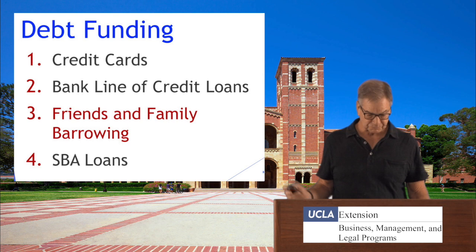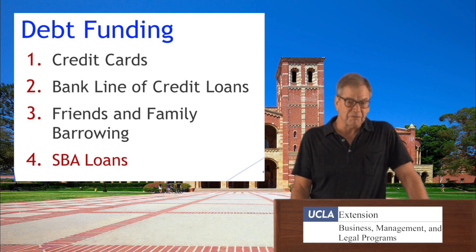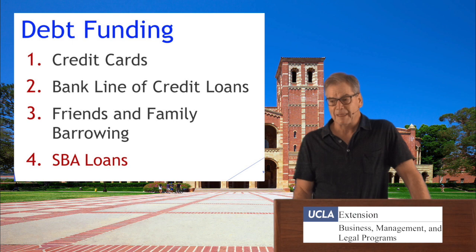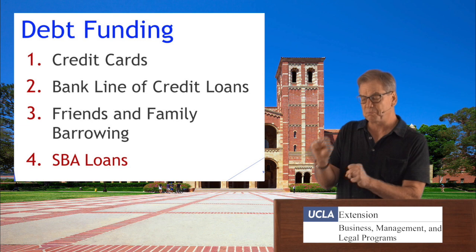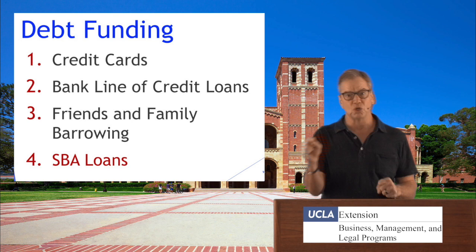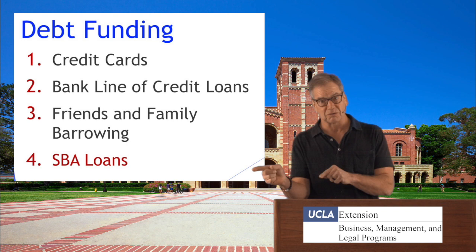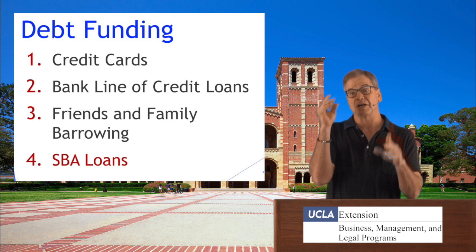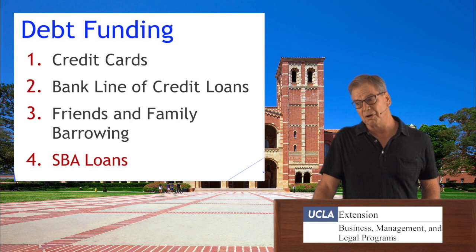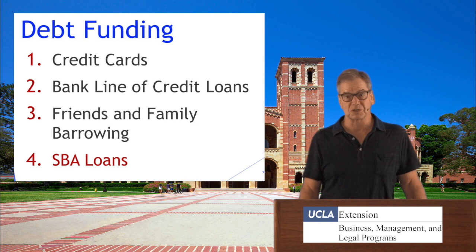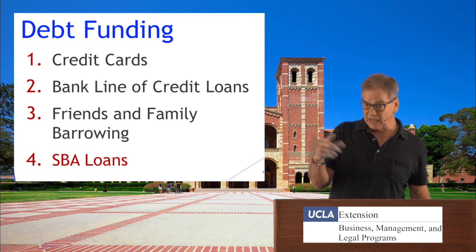Next are SBA loans — Small Business Administration loans. The SBA has relationships with big major banks, and the banks agree to loan money to you at a very low interest rate. If you default on the loan, the government agrees to pay the bank back — so it's actually banks lending the money, not the government. If you are negligent with the money you borrow and make no attempt to start a business, that is a criminal offense, and an SBA loan can actually land you in jail.